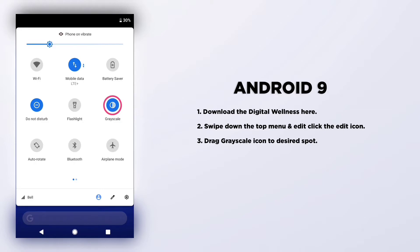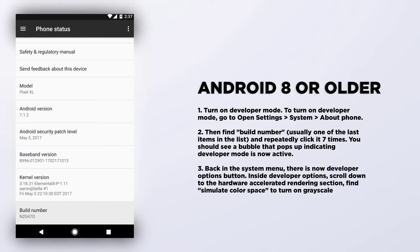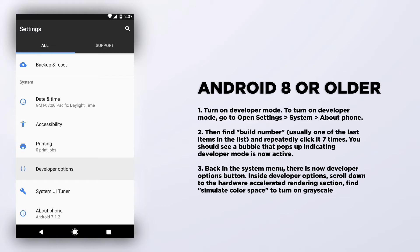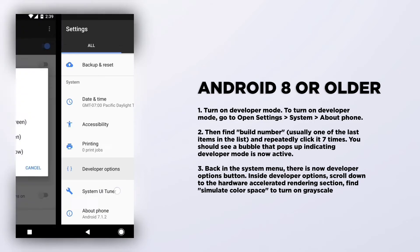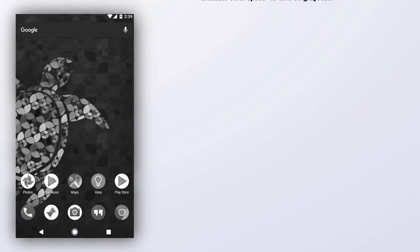When you click on this Greyscale tile option, your phone will be turned black and white. If you are using Android 8 or older, go to the About Phone section and tap on the Build Number seven times. An option known as Developer Options will appear. Inside Developer Options, find Simulate Color Space, click on it, and tap on Monochromacy.